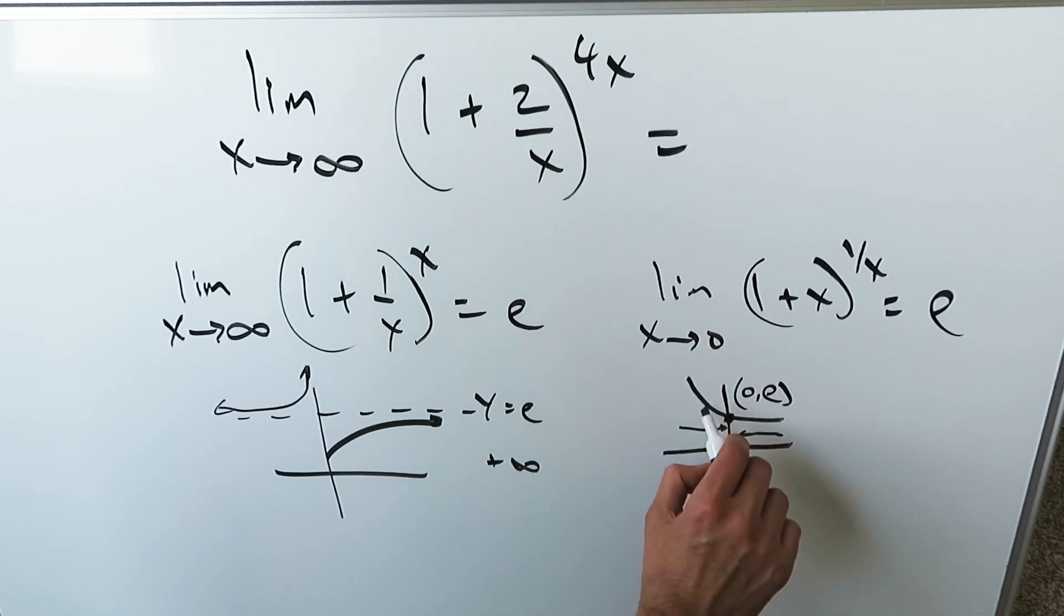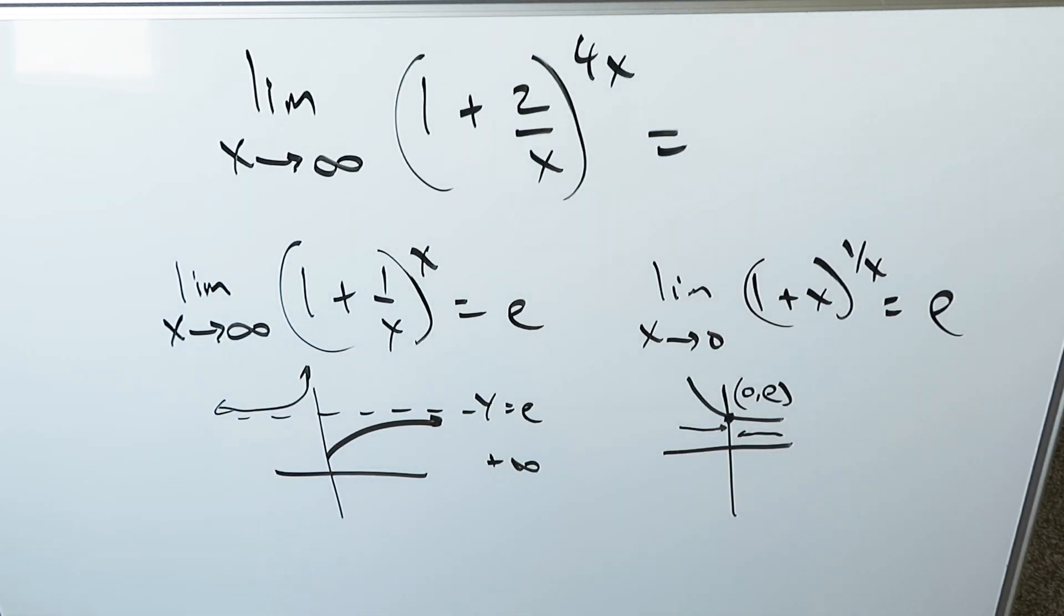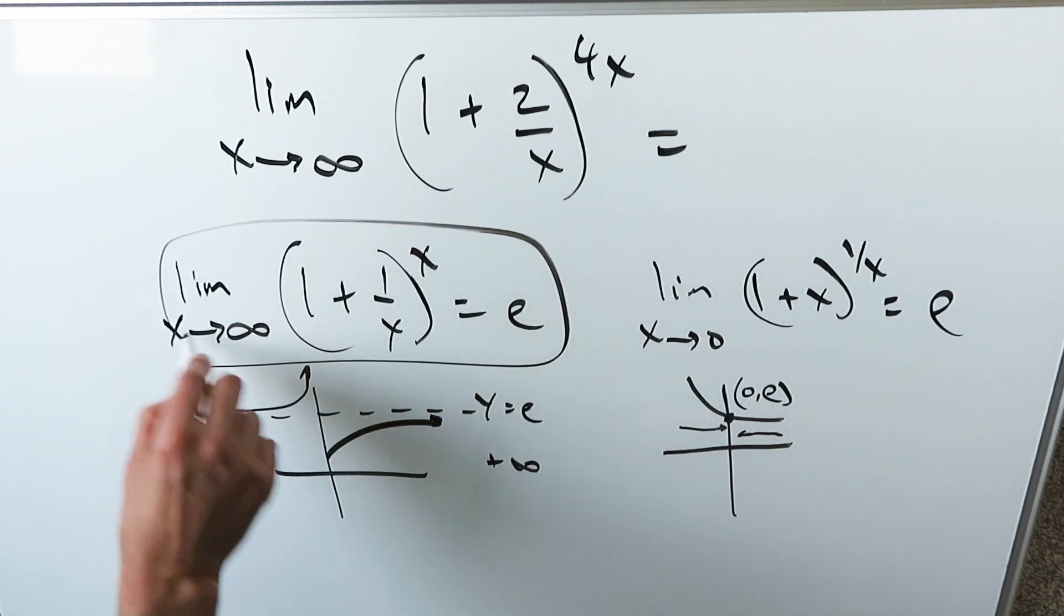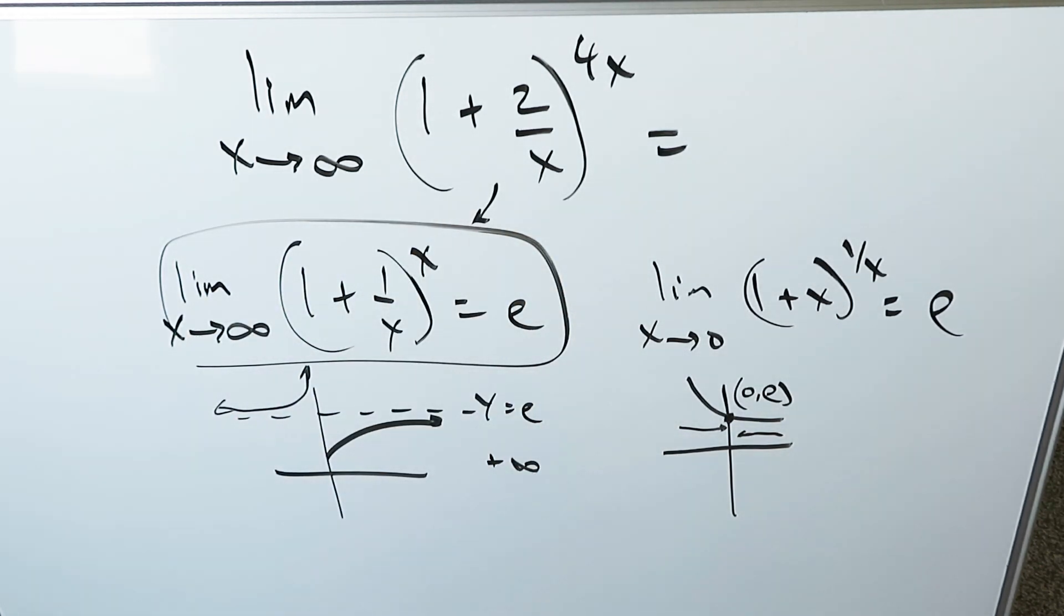And this function over here is 1 plus x to the power of 1 over x. As x values approach 0 from the right and left, your function approaches this intercept which is e. Hence, these are two limits you should be aware of, but for the purpose of this video, this is what is applying. We have to somehow convert that into this, and we can.